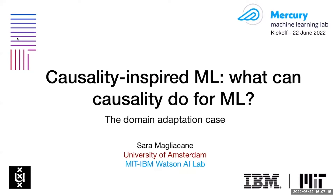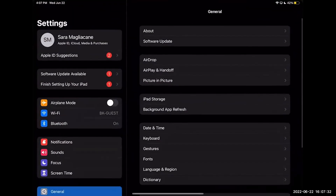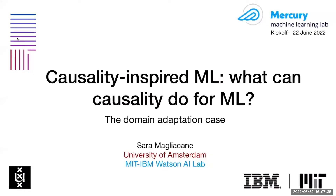She got her PhD in 2017 working on logics for causal inference under uncertainty, and did postdocs at IBM and with Joris. Her current research focus is on causality-inspired machine learning — applications to causal inference, machine learning, and particularly transfer learning and formally safe reinforcement learning.